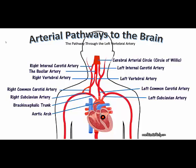The pathway on the left is identical except for the brachiocephalic trunk. Oxygenated blood leaves the heart and goes through the left subclavian artery, then the left vertebral artery, to the basilar artery, and ends up at the cerebral arterial circle.